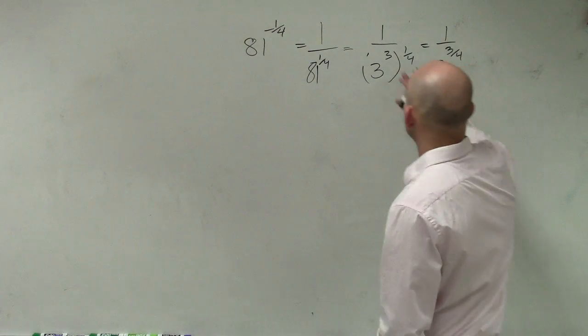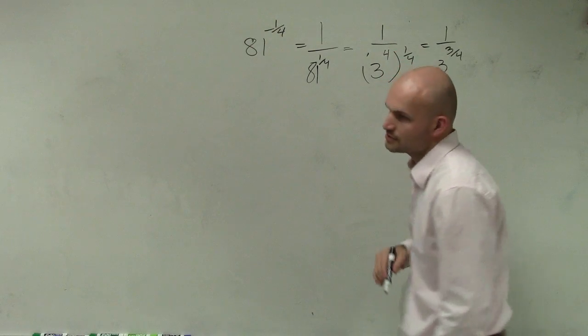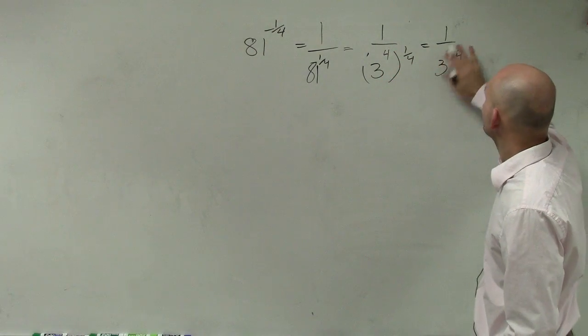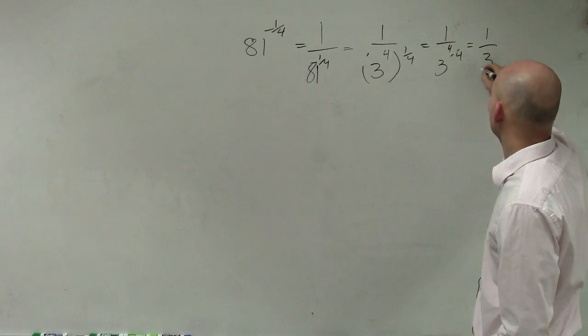That's 3 to the fourth power. 3 cubed is 27. So it's 3 to the fourth. That becomes four-fourths in the exponent, which equals one-third.